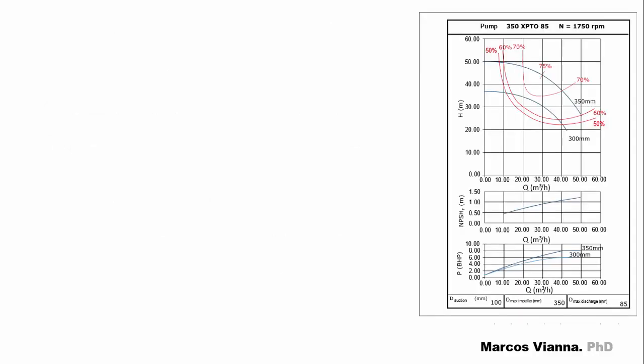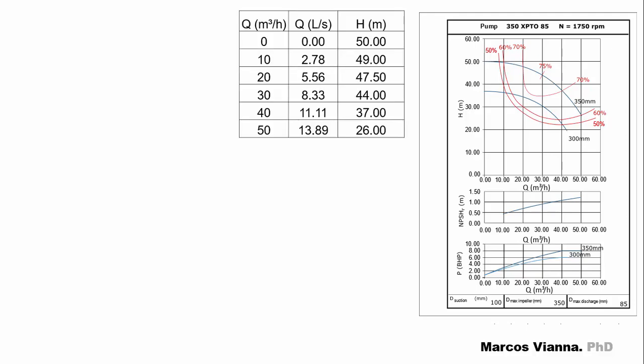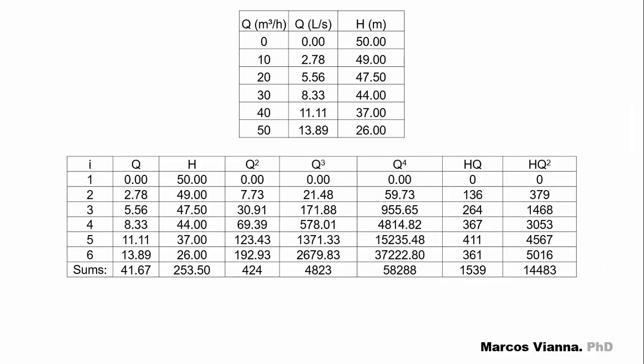Okay, now we're able to fit a second degree polynomial function to the pump curve corresponding to the 350 millimeters impeller diameter. Here are some Q and H values extracted from the pump chart, and we put them in this table. The Q values are in liters per second. We also calculate the values of the other columns. It's easy to do it in a spreadsheet software, such as Microsoft Excel.